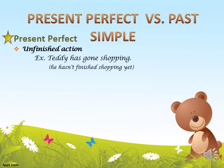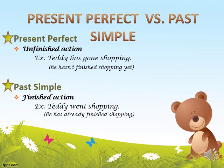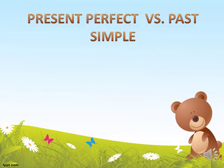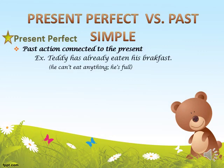In the present perfect, we also talk about unfinished actions — Daddy has gone shopping, he hasn't finished shopping yet. In the past simple, we talk about finished actions — Daddy went shopping, she has already finished. In the present perfect, there is a connection between past and present: Daddy has already eaten his breakfast, he can't eat anything — he's full. In the past simple, the action has no connection to the present time.